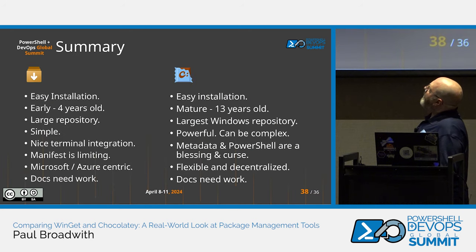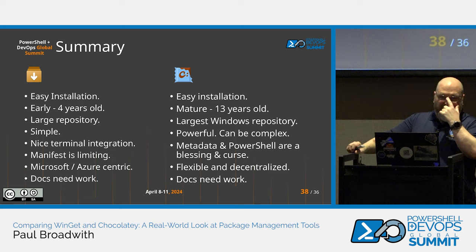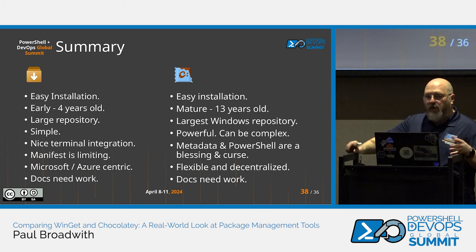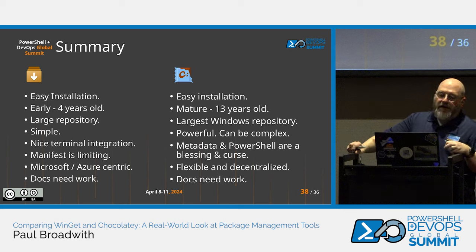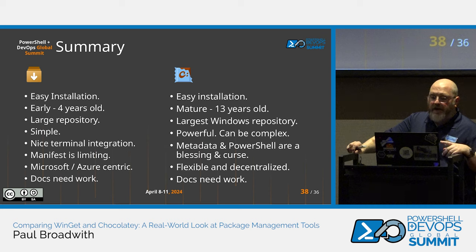Summary: WinGet has easy installation, and while it's only four years old it's come a long way with a large Microsoft team. It's simple — I really like the question-based package creation approach. It has a large repository and nice terminal integration. However, the manifest is quite limited, it's very Microsoft/Azure-centric, and the documentation needs work — some information may be deliberately excluded, and some is just missing.